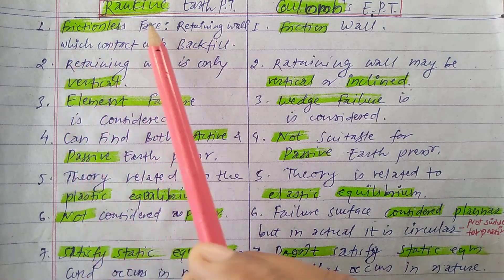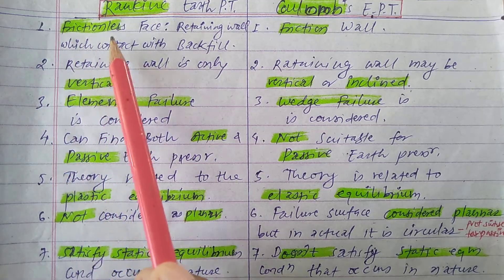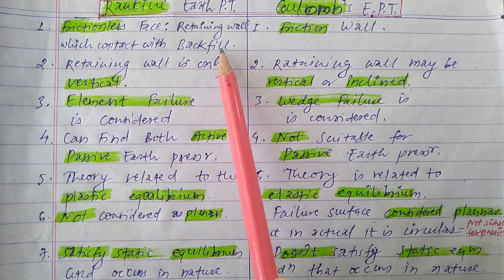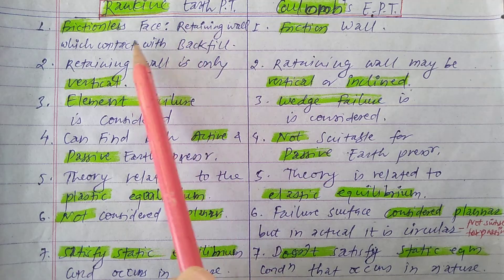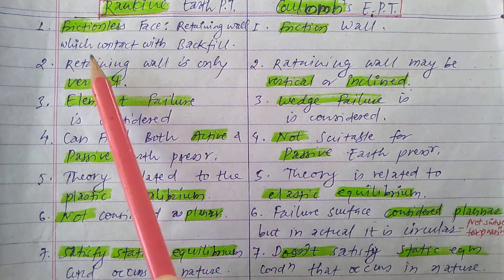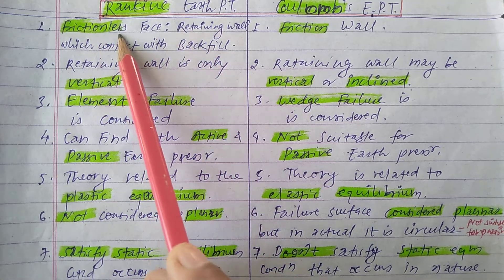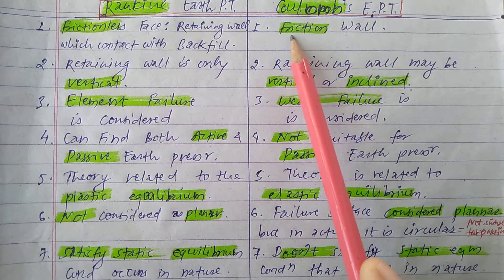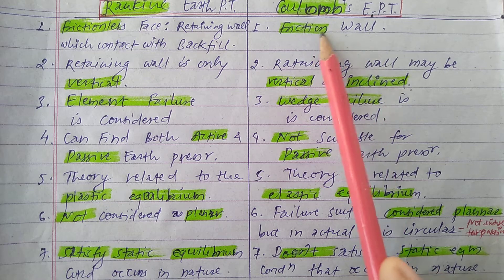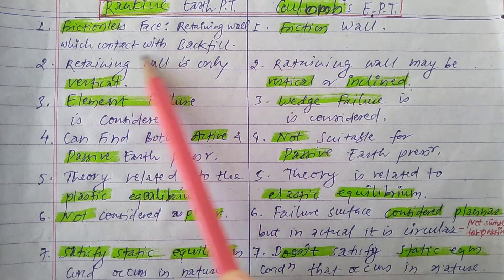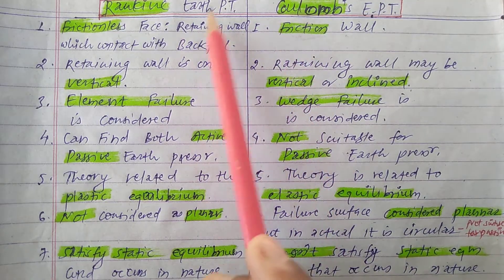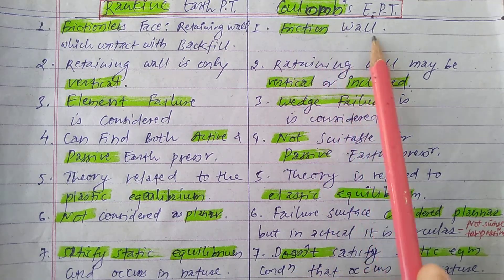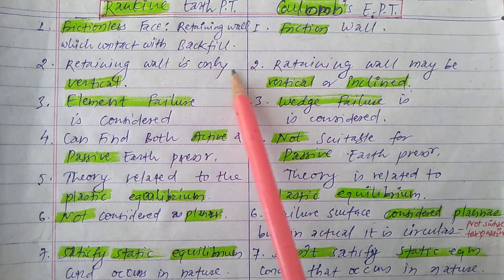First difference: in Rankine's earth pressure theory, the surface of the retaining wall which is in contact with the backfill is frictionless. But in Coulomb's earth pressure theory, the wall is a friction wall — the retaining wall in contact with the backfill is a friction wall. So the basic difference is: Rankine assumes a frictionless wall, but Coulomb considers a friction wall.